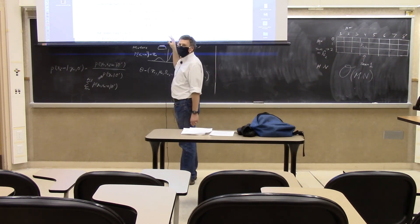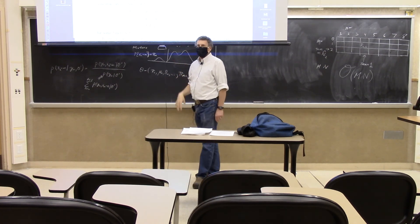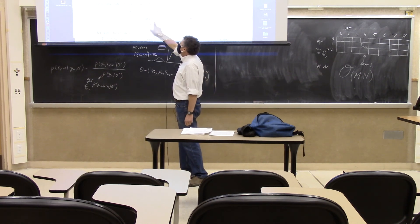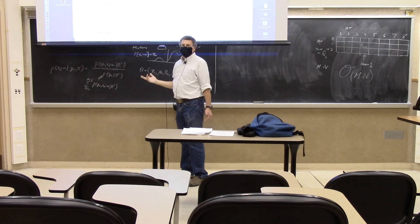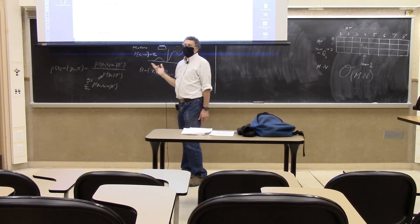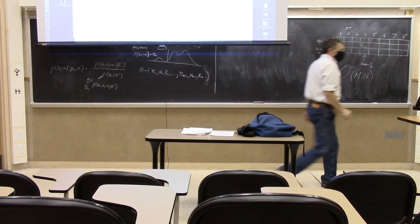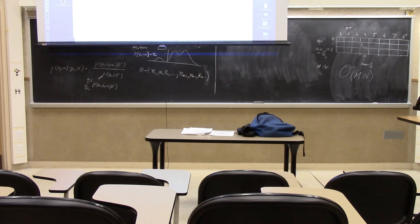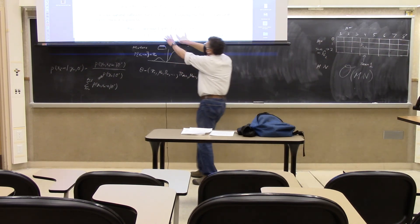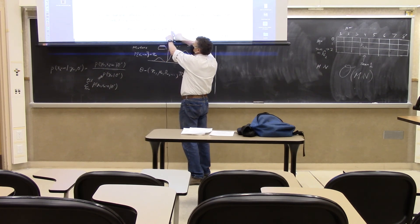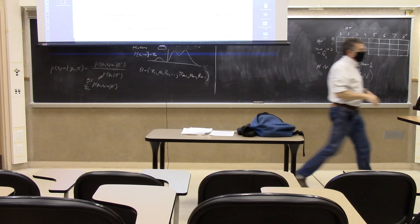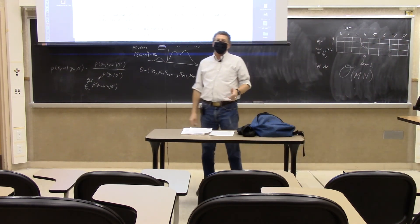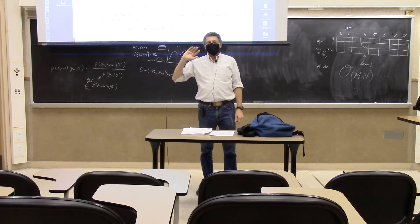If you have an exponential distribution and maximize the Q function, the expectation comes into T because of this linear structure, giving a simple answer. We're out of time — I'll finish this next time and then we'll move on to the next topic. See you on Wednesday.